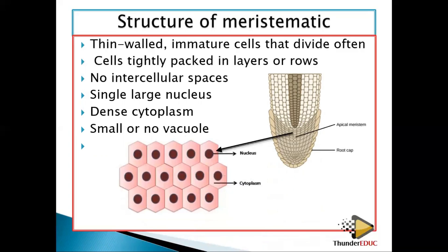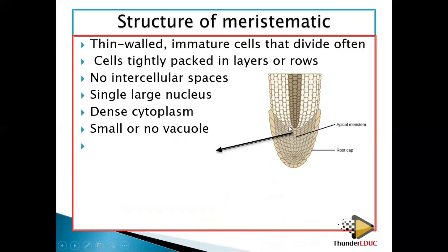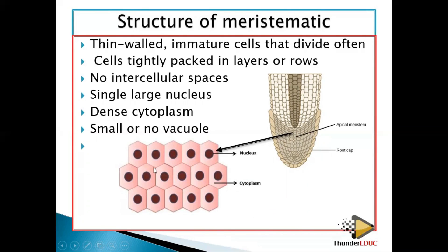Here is an example of meristematic tissue. It is very tightly packed with no spaces in between. When magnified, it looks hexagonal. The nucleus is very large, there is no vacuole, and the cytoplasm is very dense. This is how meristematic tissue looks, and it can modify into different structures as the plant develops.